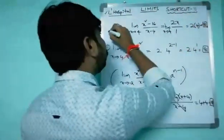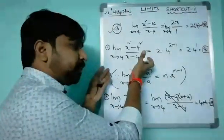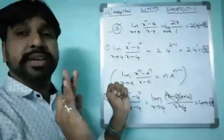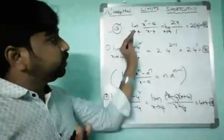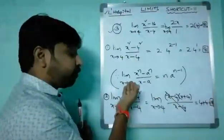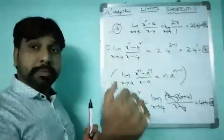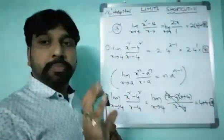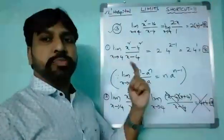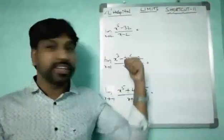Substituting x = 4 gives 2 × 4 = 8. Some students may prefer the earlier methods, but L'Hospital's rule is the ultimate method — you can crack 60 to 70 percent of problems very easily. For example, if x⁵ - 4⁵ were given, the algebraic formula a⁵ - b⁵ = (a - b)(a⁴ + a³b + a²b² + ab³ + b⁴) is too complex to remember. L'Hospital's rule handles all such cases easily.